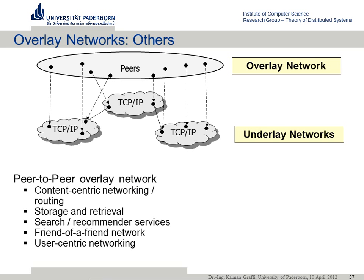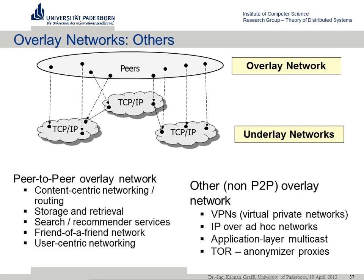Here are two examples of overlay types. First, peer-to-peer — offering storage, retrieval, and search, with examples coming in following lectures. There are also non-peer-to-peer overlays: Virtual Private Networks, which create a small network with their own addressing and additional features; Application Layer Multicast, for reaching multiple destination nodes when IP can't support it; and TOR, the onion-based anonymizer, which adds features for anonymous routing. So more features but also more traffic — the question is what features we need in this peer-to-peer environment.